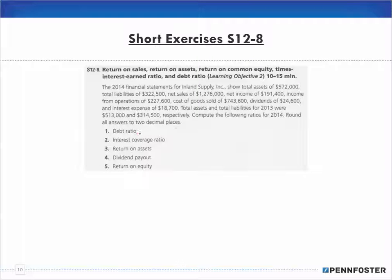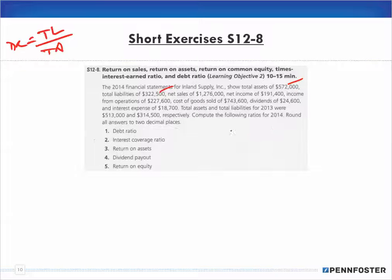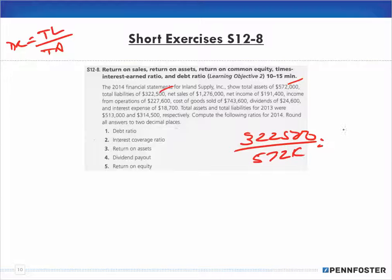For the debt ratio: the debt ratio is total liabilities over total assets. For 2014, total assets are 572 and total liabilities are 322.5. So 322.5 divided by 572 gives us 0.56, or 56 percent. That's the debt ratio — 56 percent. The formulas for these are in the textbook; look them up. You don't need to memorize them, but you do need to understand what they are.